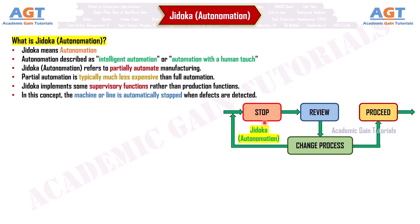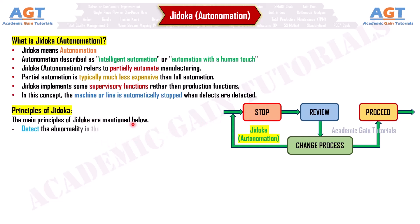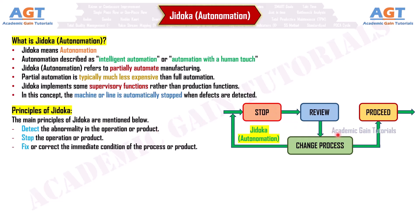Principles of Jidoka. The main principles of Jidoka are: detect the abnormality in the operation or product; stop the operation or product; fix or correct the immediate condition of the process or product; and investigate the root cause and install a countermeasure in the process or product.